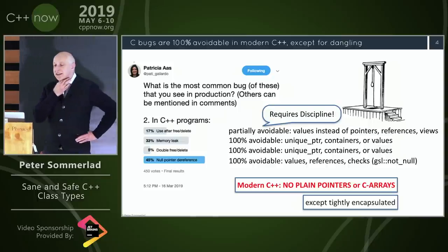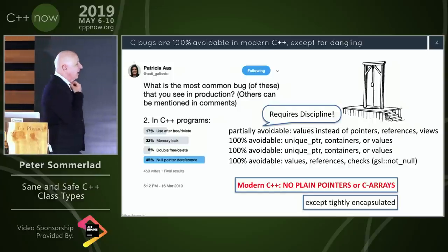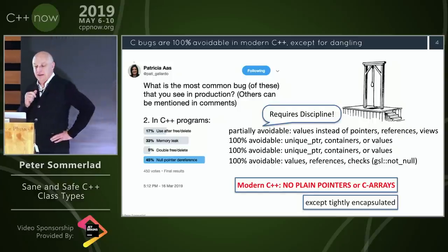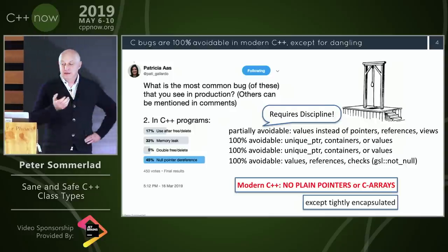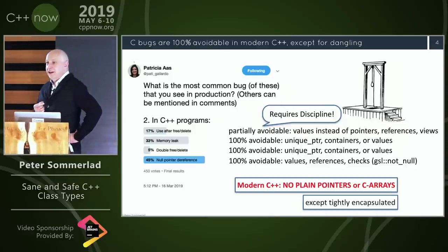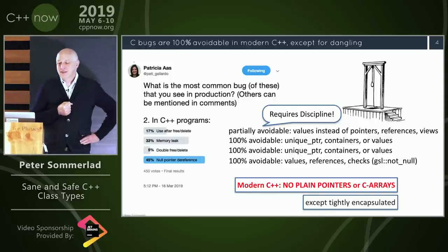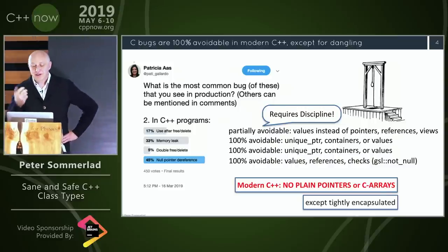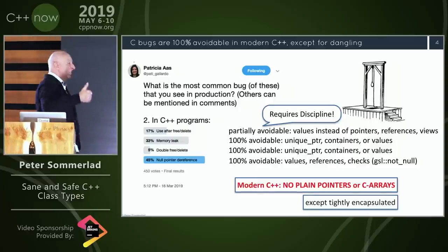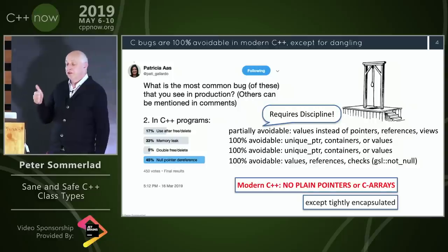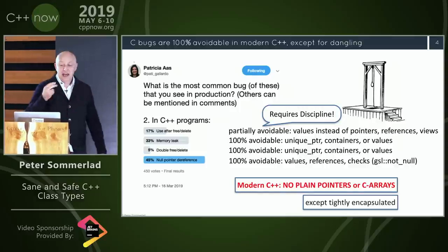Most C bugs are 100% avoidable in modern C++, except for the nagging issue I call 'dangling' — use after free. If you use a dangling reference, which can be a pointer or other means like a view, you hang yourself. We now have in C++17 and C++20 even more means of creating dangling values because of views and span, so be careful.